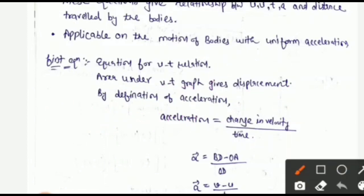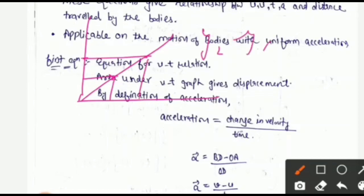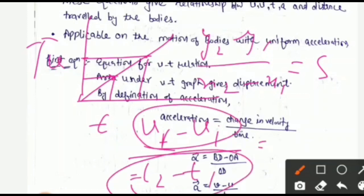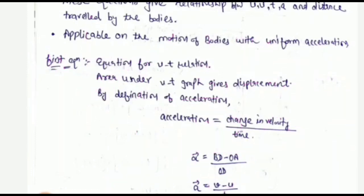To find the slope, you take the graph, take two points, extend those points, and then use (Y2 − Y1) / (X2 − X1) = slope. In the VT graph, Y-axis is along velocity and X-axis is along time, so the slope becomes: (final velocity − initial velocity) / time = change in velocity per unit time, which represents acceleration. So acceleration equals slope in case of the VT graph.